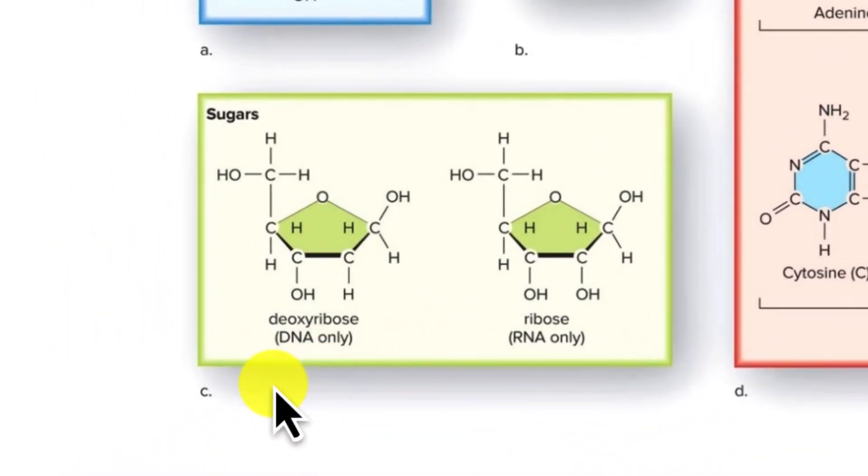In DNA, the sugar is deoxyribose. That's where the D in DNA comes from, deoxyribonucleic acid. It's called deoxy because this carbon number two here, this carbon, doesn't have an oxygen with it, just a hydrogen. You notice here that the carbon does have an oxygen and a hydrogen with it, and this is in RNA. So the deoxy is referring to the fact there's not an oxygen there.